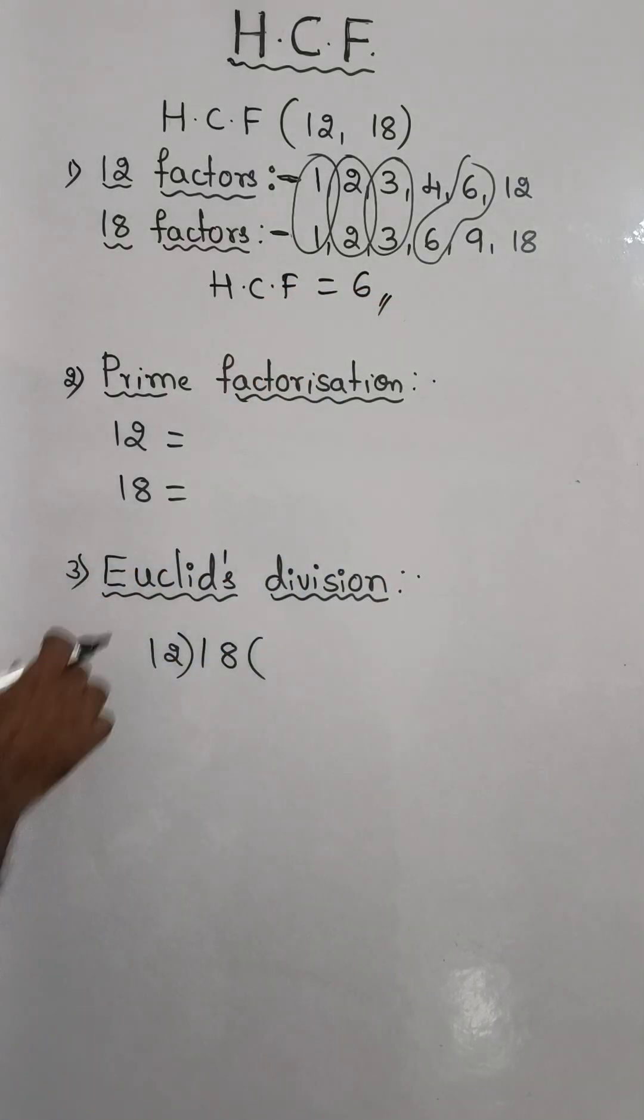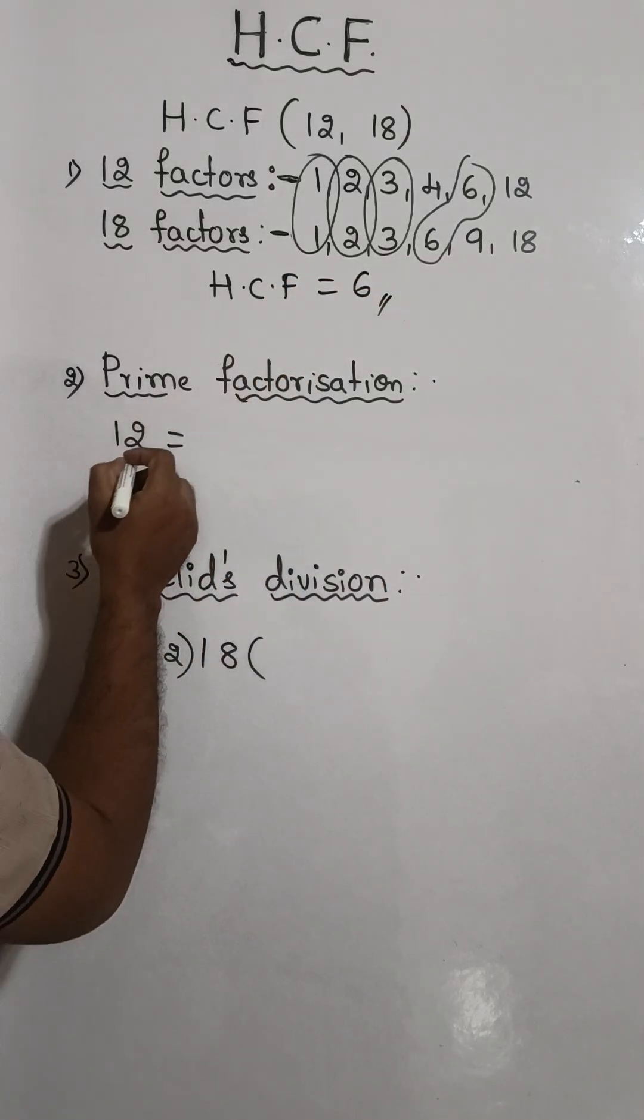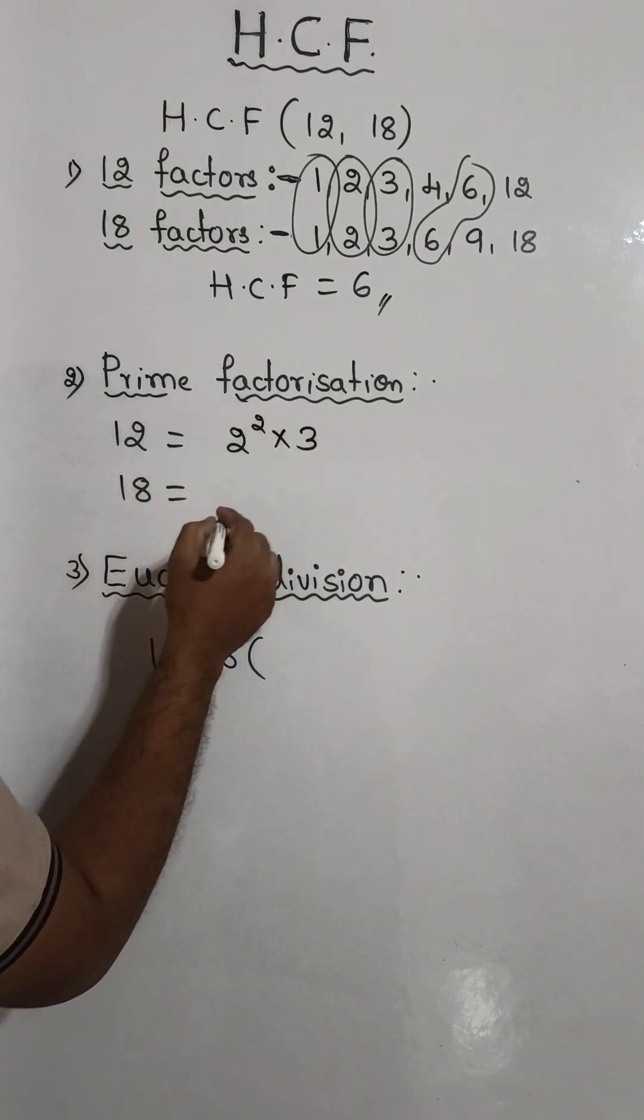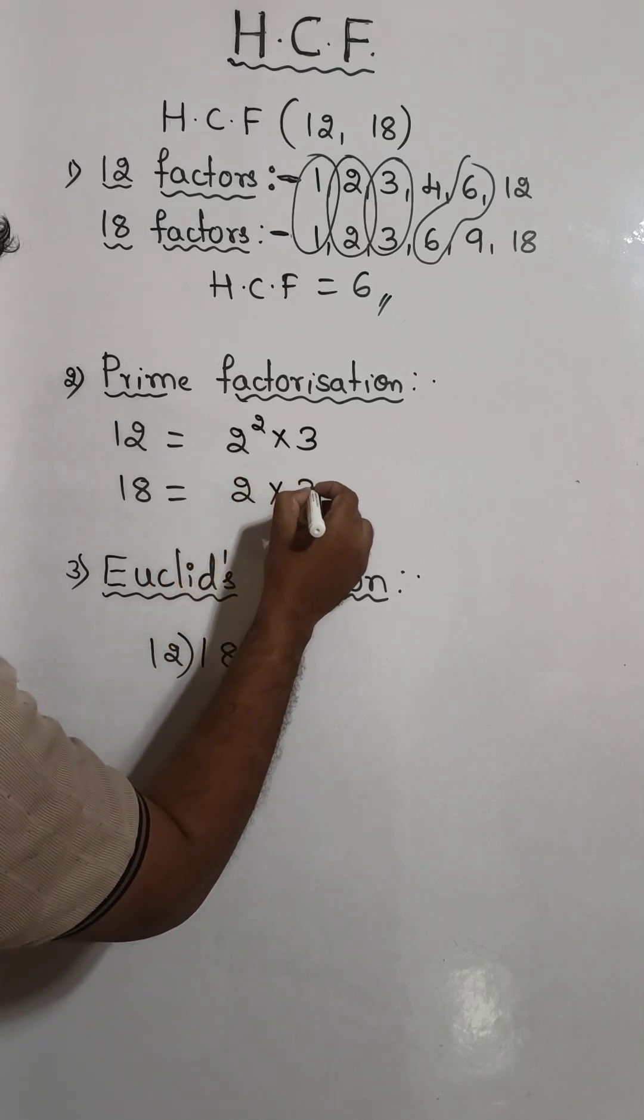Now by the prime factorization method, 12 can be written as 2 squared times 3, and 18 can be written as 2 times 3 squared.